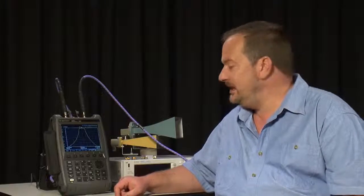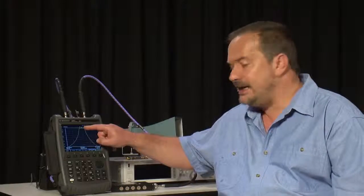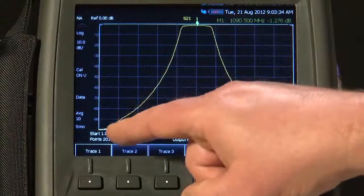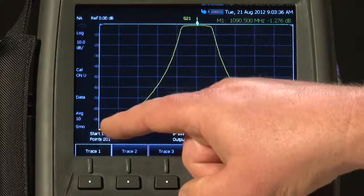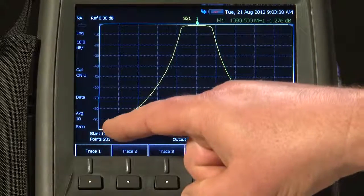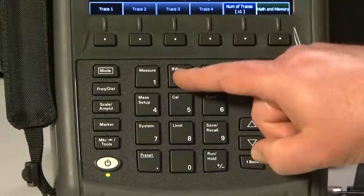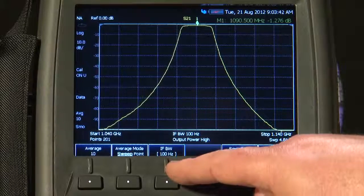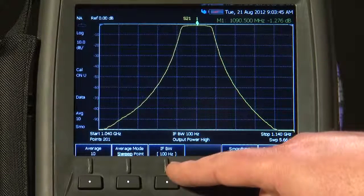Another thing you will immediately see on the FieldFox is the excellent dynamic range. Here, without any effort at all, we are easily measuring more than 100 dB of this filter. If I press the Bandwidth button, you will see I have only had to set a 100 Hz IF bandwidth in order to do that.